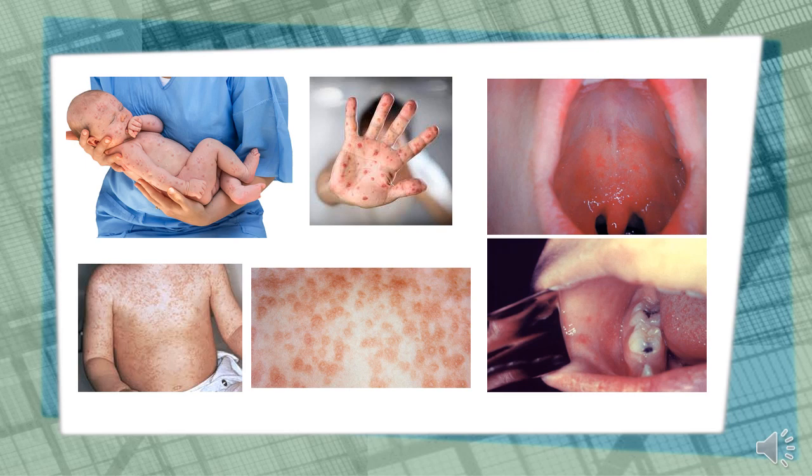Measles is one of the most contagious of all infectious diseases. Up to 9 out of 10 susceptible persons with close contact to a measles patient will develop measles. The measles virus is primarily transmitted by respiratory droplets over short distances, and less commonly by small particulate aerosol that remains suspended in the air for a long period of time. The virus replicates in the respiratory tract and then spreads to the local lymphatic tissues.